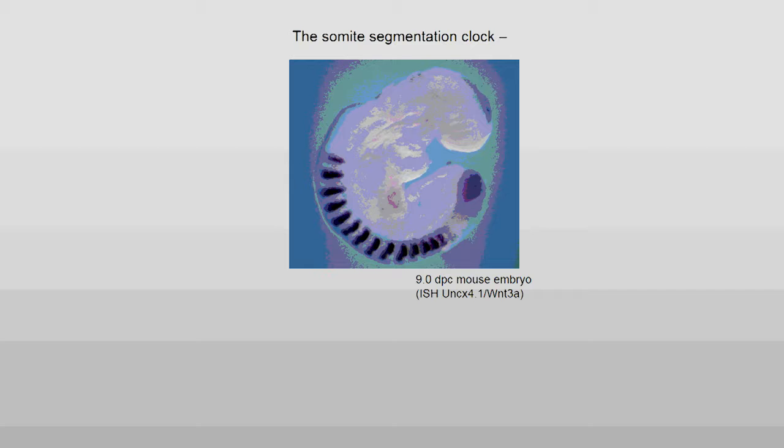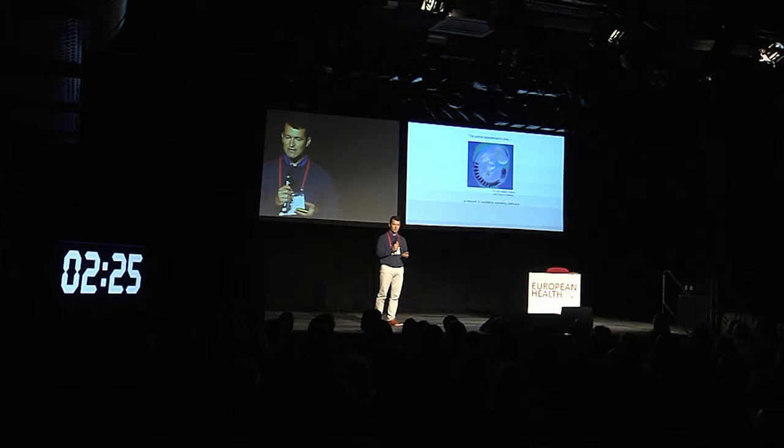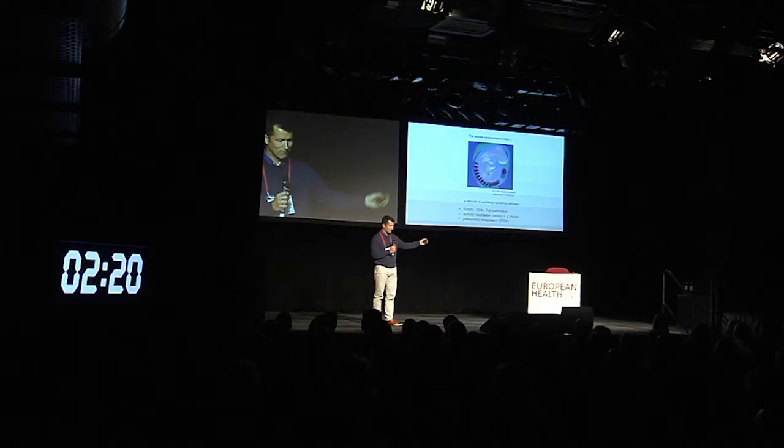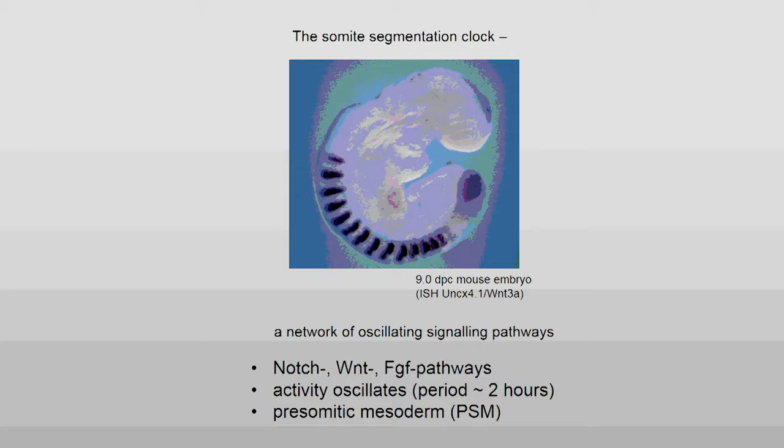It consists of several pathways that interact, and these are well-known pathways: the Notch, Wnt, and FGF pathway. In this context, these pathways show oscillatory periodic activity, and they peak every two hours. They do so in the posterior end of the embryo, shown here on the right of the image, in cells that are undifferentiated and will form these organs.